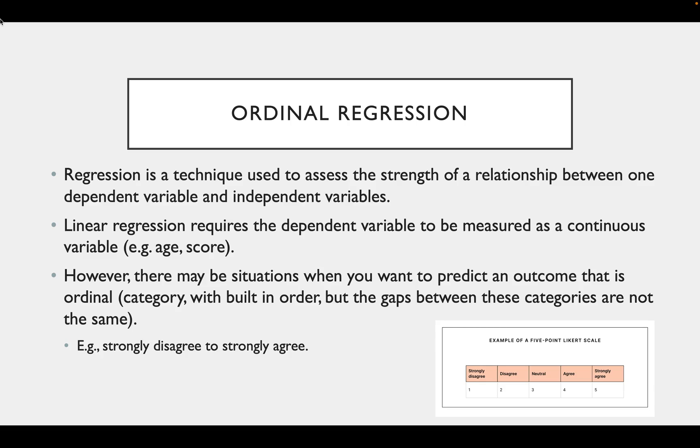However, there may be situations where you want to predict an outcome that is ordinal. This means you have a categorical variable that has a built-in order, but the gaps between the categories are not the same. For example, if you are using a Likert scale that ranges from strongly disagree to strongly agree.